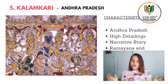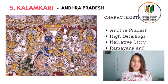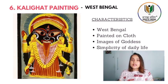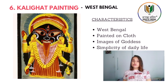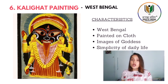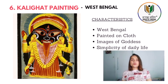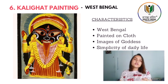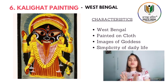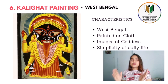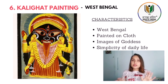The next art form is Kalighat painting, which is from West Bengal. It also has gods and goddesses in it, and old people used to make these paintings on cloth. Kalighat painting also has other features — it shows the daily life of the people.